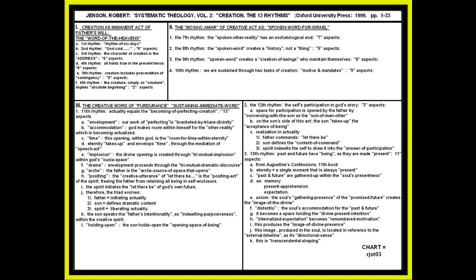The 11th rhythm reads that actuality equals the becoming of perfecting creation. The becoming of perfecting creation. There are 13 aspects. Jensen begins with the concept of envelopment. Our work of perfecting is bracketed by the triune divinity of that tri-mutual space, Ousia space. And then he uses the concept of accommodation because God makes room within himself for the other reality which is becoming actualized.